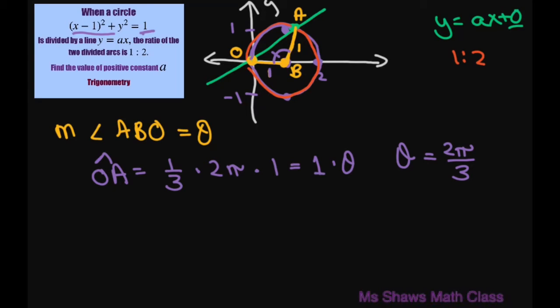From there we notice that if this is 2π/3, then the measure of angle AOB equals the measure of angle OAB. Therefore it's isosceles.